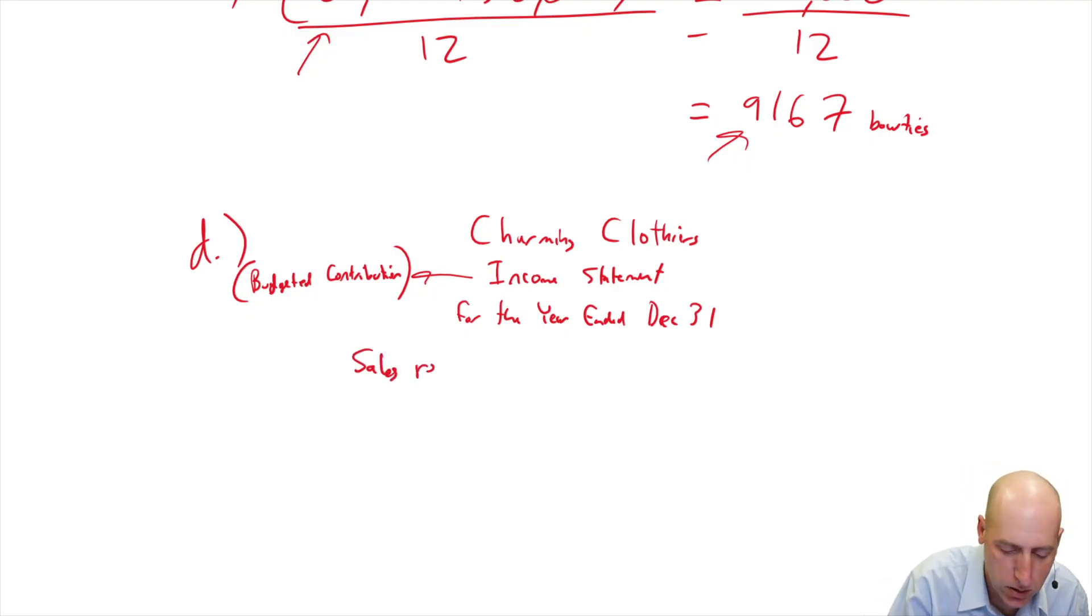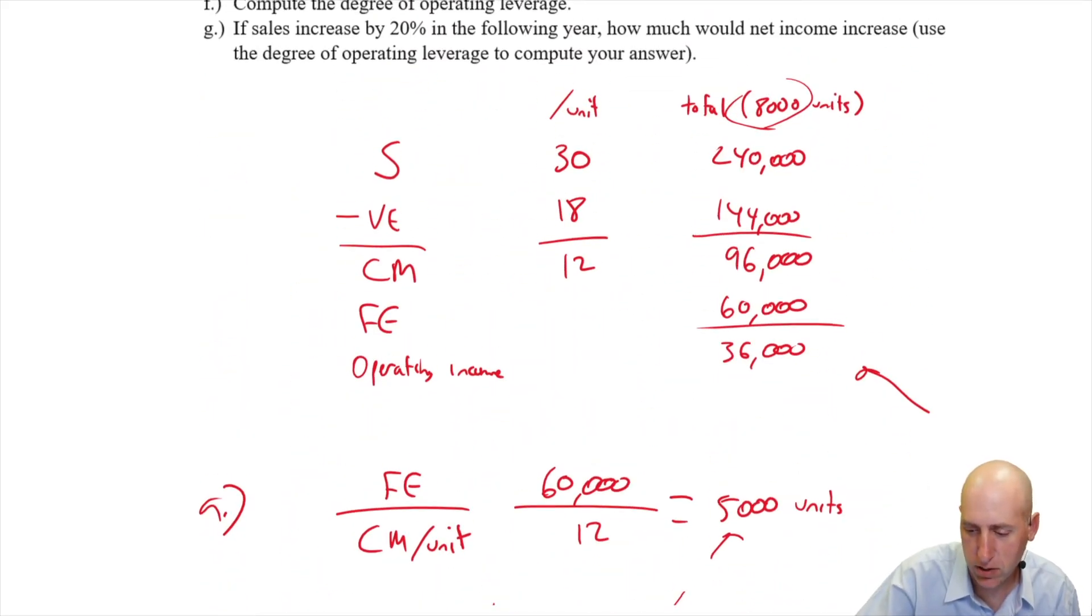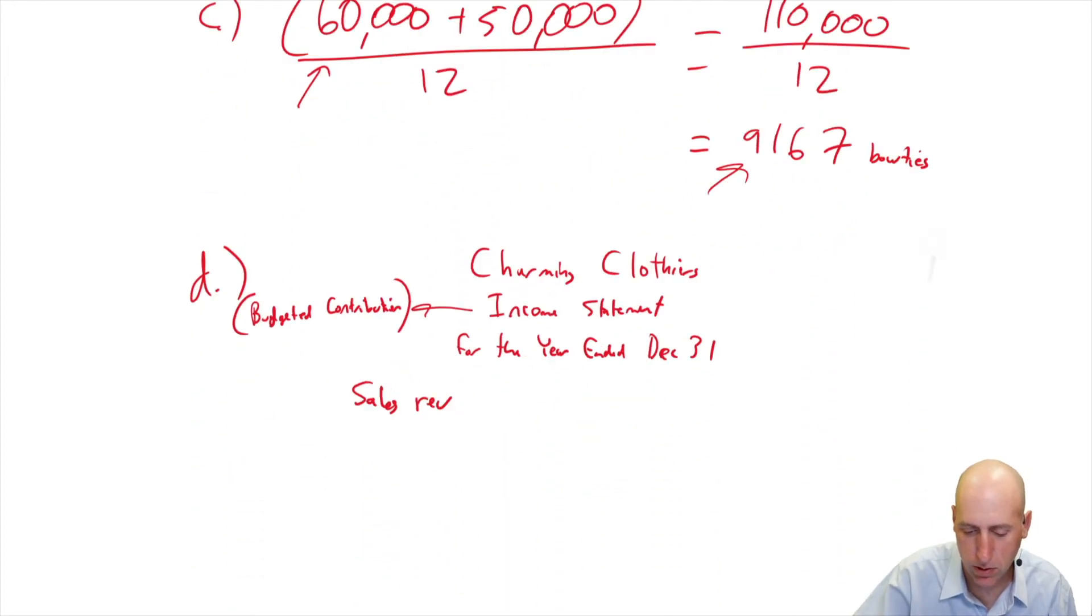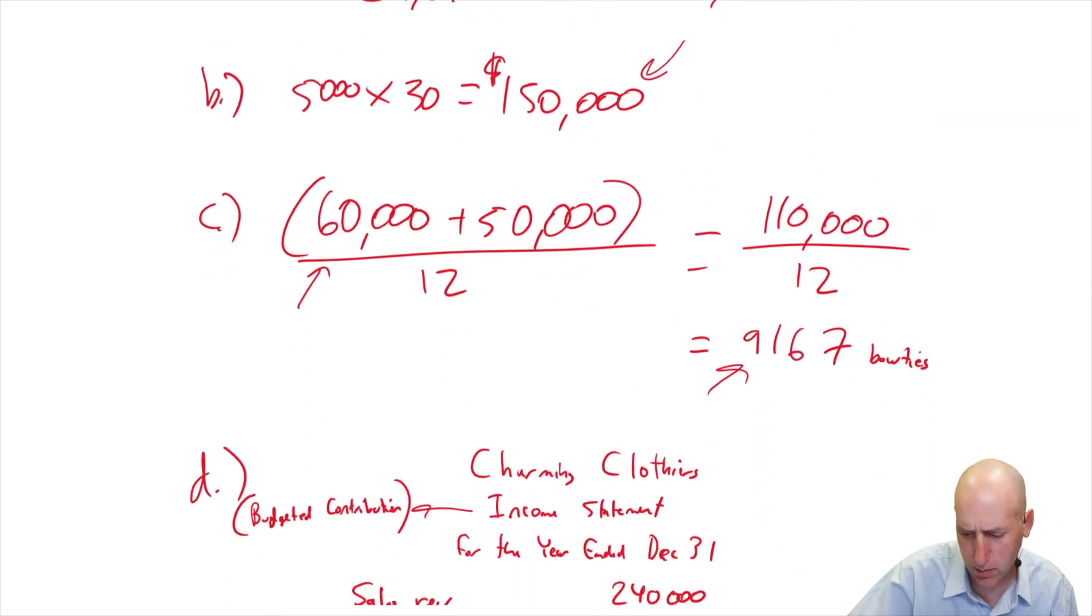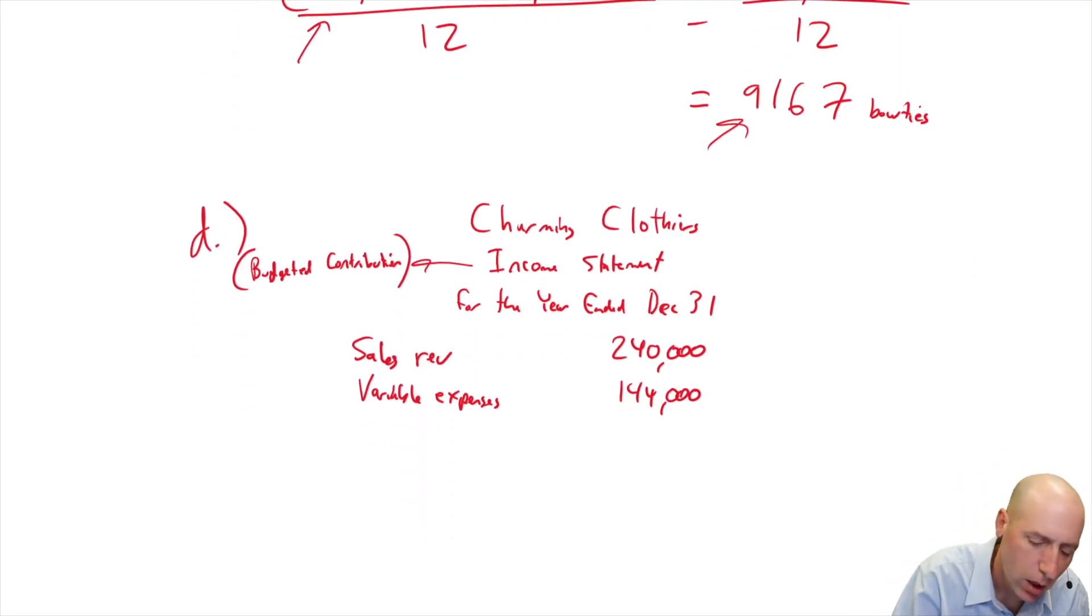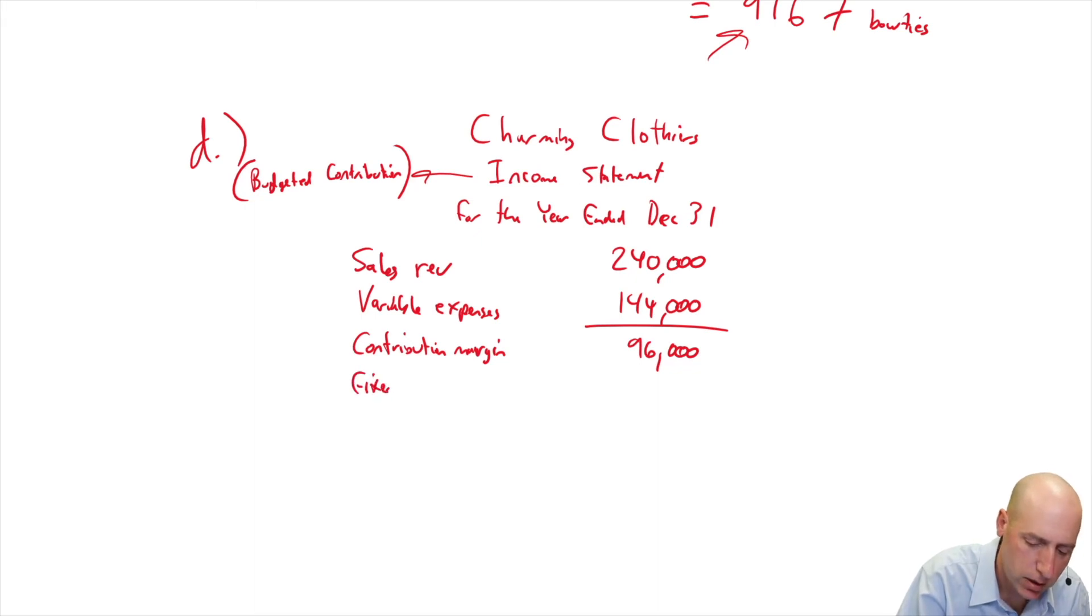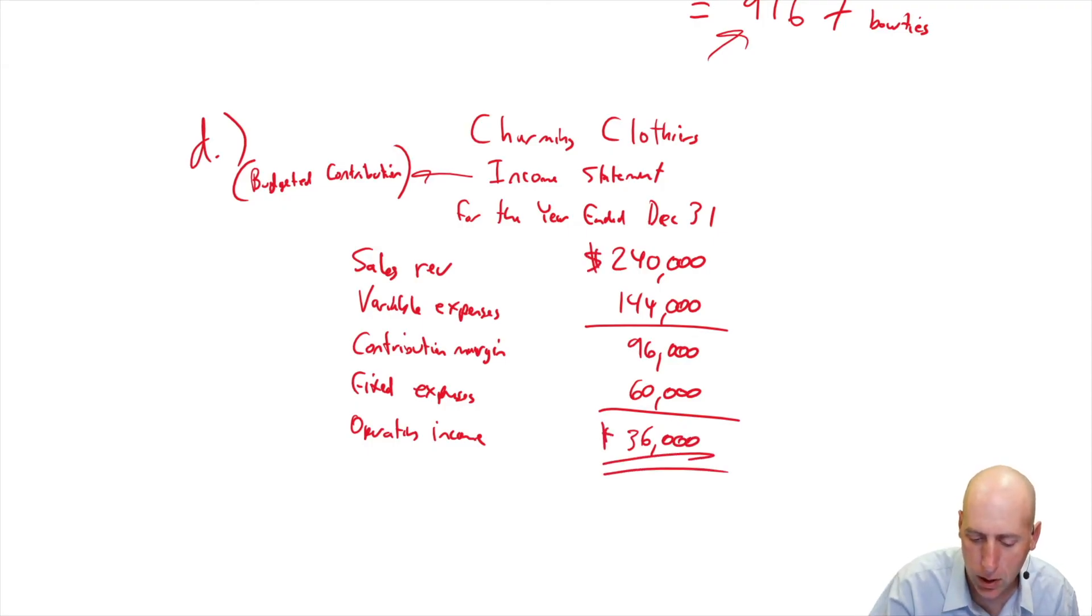Okay. So our top line is our sales revenue and our projected sales revenue is $240,000. I'm just taking all of these numbers. That's my contribution format income statement, $240,000. Our variable expenses are projected to be $144,000. Our contribution margin, $240,000 minus $144,000 is $96,000. Our fixed expenses is $36,000. Our income before tax, dollar sign at the top, dollar sign at the bottom. And we've got ourselves a very nice budgeted contribution format income statement.